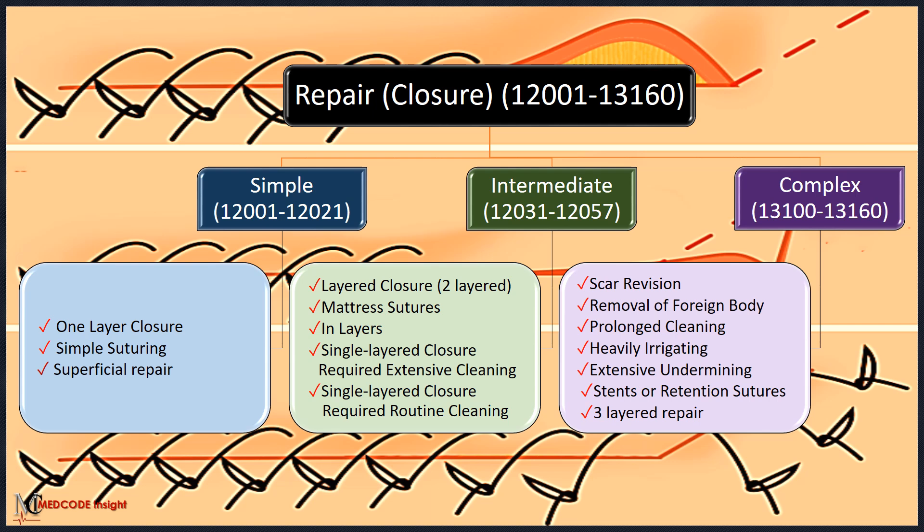When coding for repair, it is essential to note the key terms associated with each type. These terms will help you determine the appropriate coding scenario. For simple repair, terms such as one-layered closure, simple suturing, or superficial repair indicate that the repair falls into the simple category and should be coded accordingly.